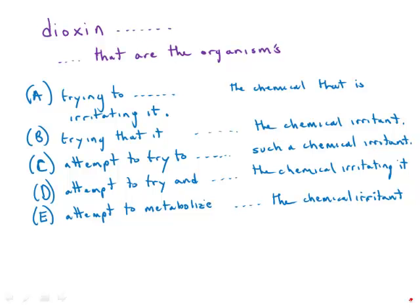This one is about dioxin, a truly nasty poison. Not surprisingly, the underlined part is really a disaster: 'the organisms trying to metabolize or render harmless the chemical that is irritating it.' That's a wordy disaster, so what's wrong with that?